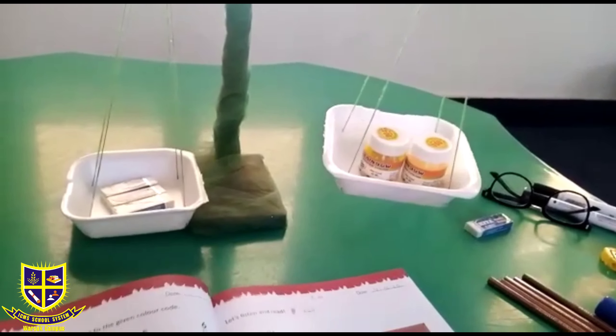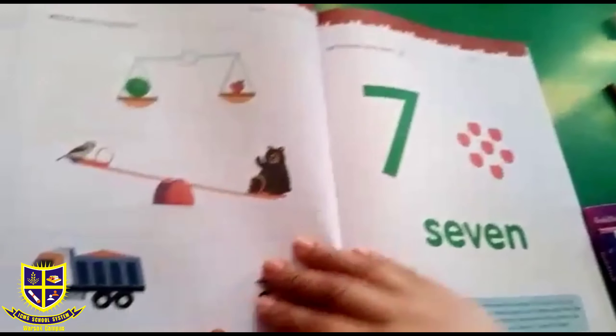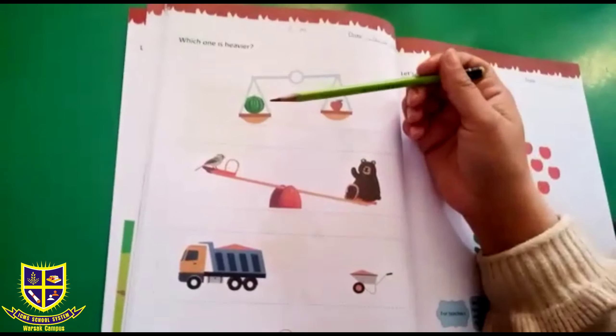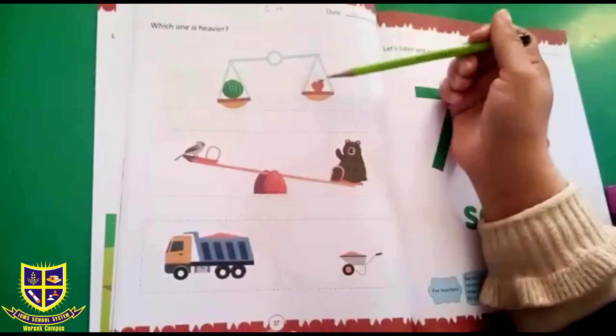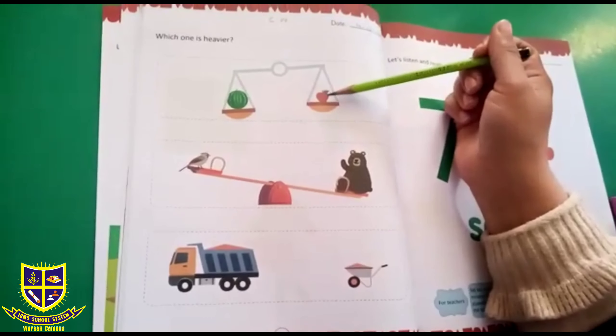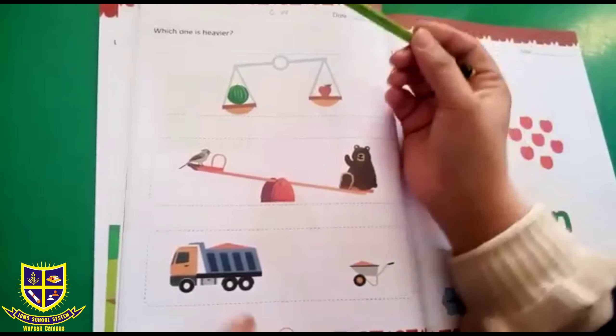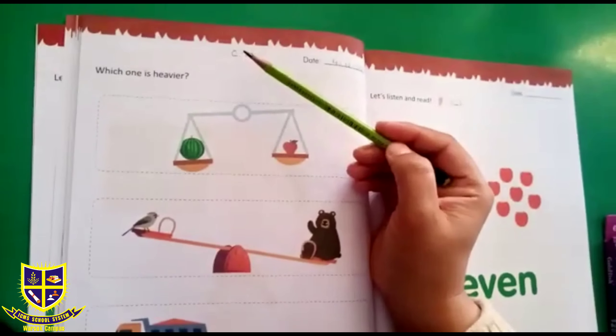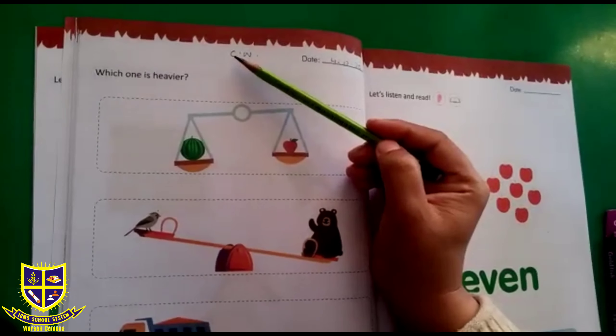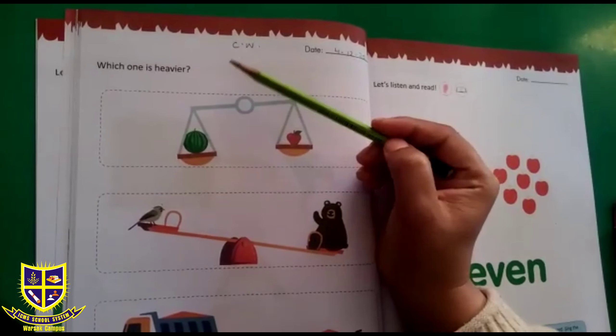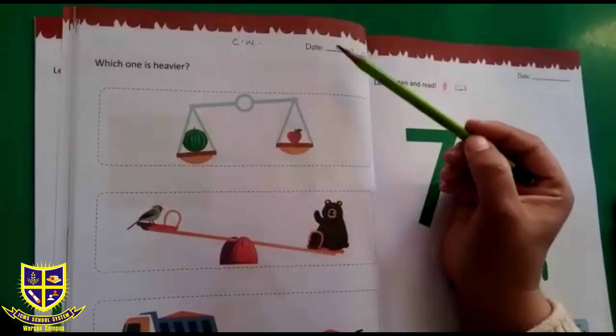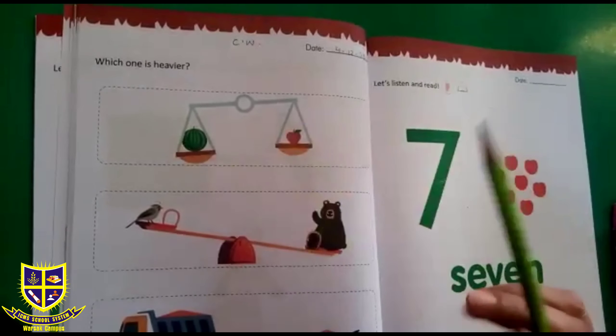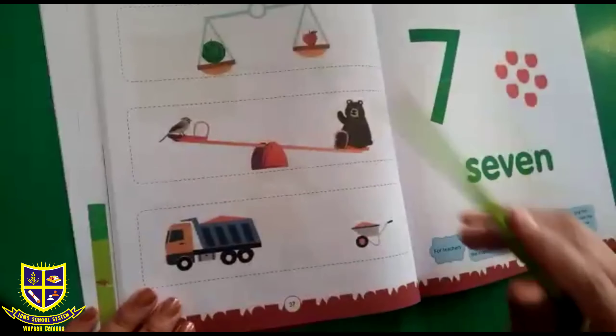Now come to the book. We also have a weighing machine here in which we have seen two things. But before starting the exercise, we will first write down the date and the classwork. First of all, you will see that C.W. is written here. You will write C.W., and then you will write the date, 4th December 2020, like the previous page.